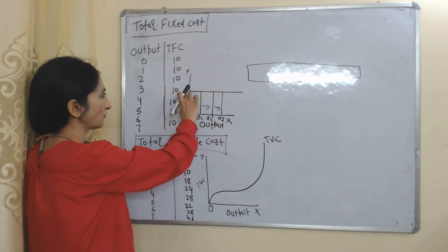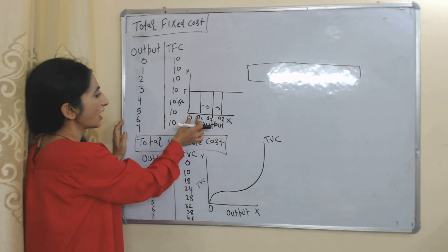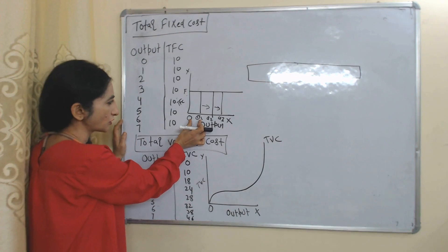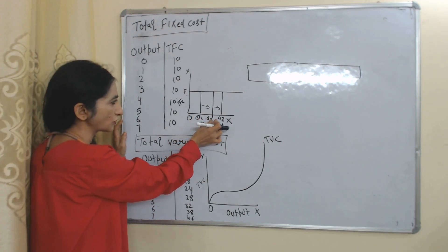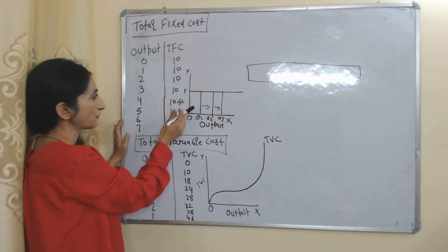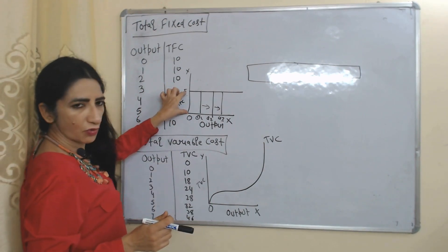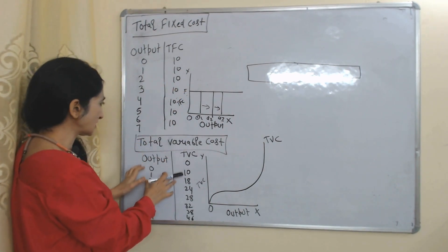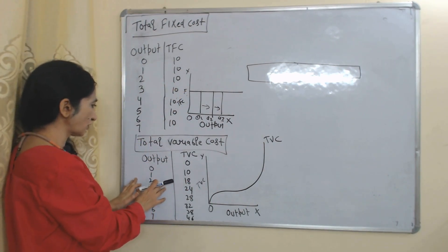In the diagram, on the x-axis we have output and on the y-axis we have total fixed cost. Our output is increasing from OQ1 to OQ2 and from OQ2 to OQ3, but our fixed cost remains constant at F.